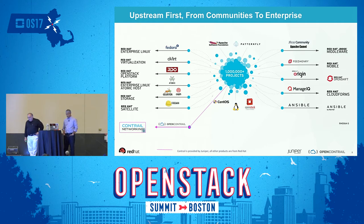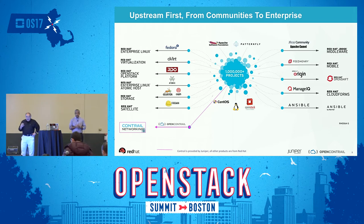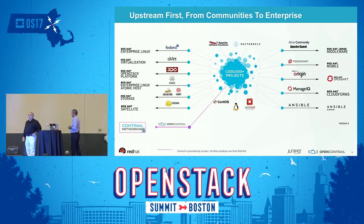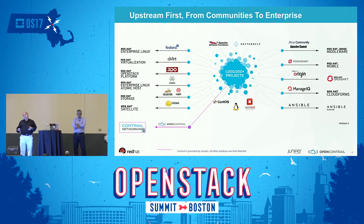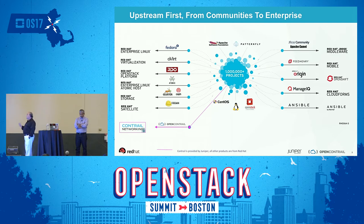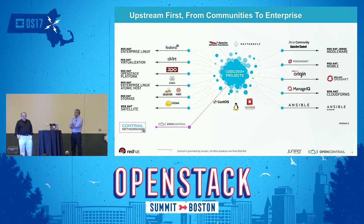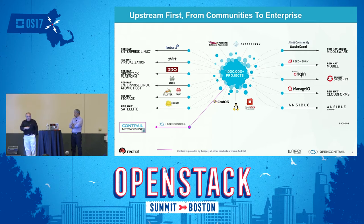Everybody who knows Red Hat knows the 'upstream first' philosophy — from communities to the enterprise. There are over a million open source projects out there; Red Hat is involved in about 1,500 different projects. From those projects we create products — 100% of our products are open source based on community projects we contribute to heavily. Juniper Contrail follows the same philosophy with the OpenContrail concept.